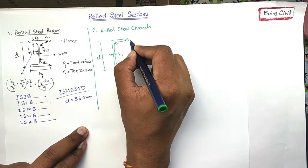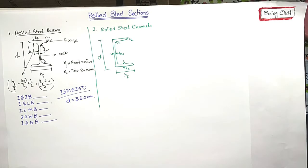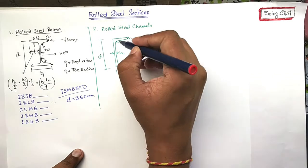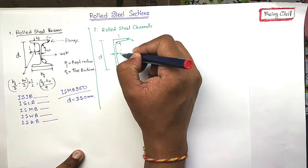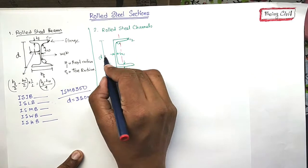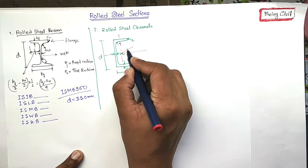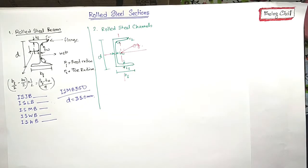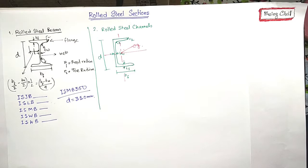And as this is an unsymmetrical section, the CG is not at the midpoint. The CG will be somewhere here. This CG can be found out from the SP 6.